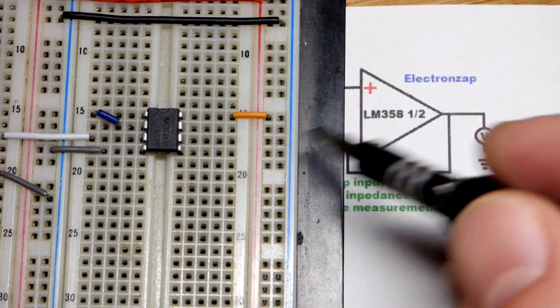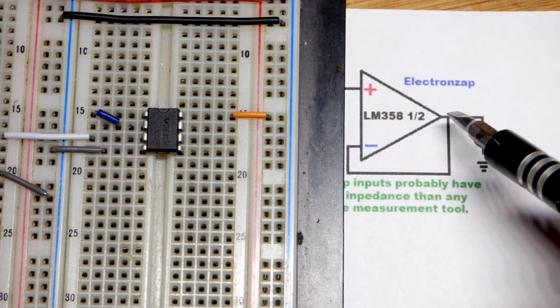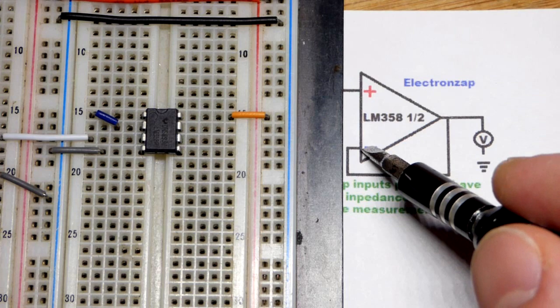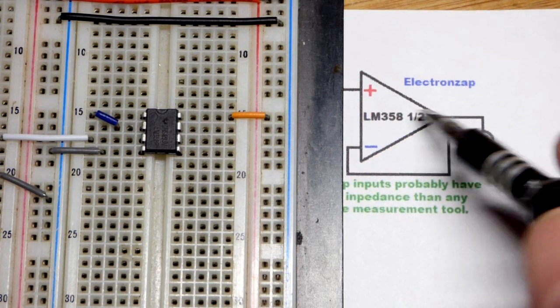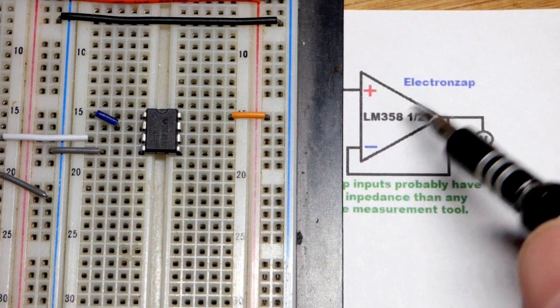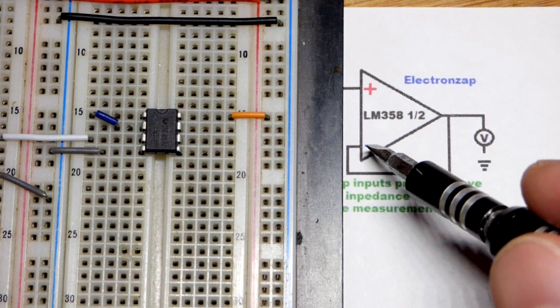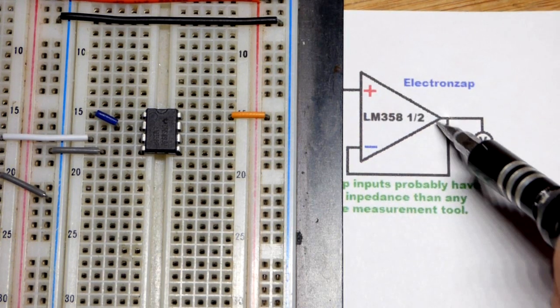So we're using the LM358. There's two of them. We're only using one right there. When you have the output fed directly back to the inverting input with op-amps, the voltage out always wants to be more like the non-inverting input than the inverting input. So when you feed it back directly, that means it shoots up or down as needed to become the exact same voltage. It's a voltage follower.